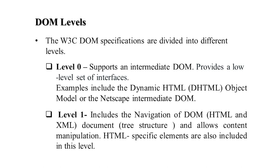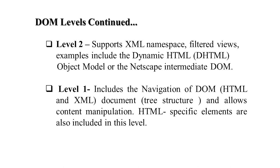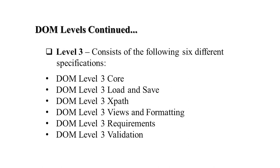DOM levels are divided into different levels. Level 0 supports intermediate DOM and provides a lower level set of interfaces like dynamic HTML or Netscape intermediate DOM. Level 1 includes navigation of the DOM tree structure and allows content manipulation. Level 2 supports XML namespaces, filtered views, and also includes dynamic HTML, navigation of DOM and XML documents. Level 3 includes DOM level 3 core, load and save, XPath, views and formatting, requirements, and validation.